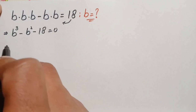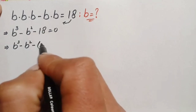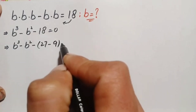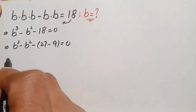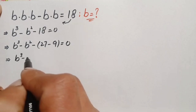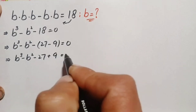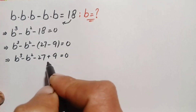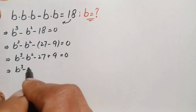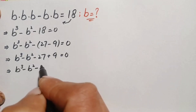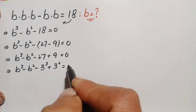We rewrite 18 as 27 minus 9, so: b cubed minus b squared minus 27 plus 9 equals 0. Now we express 27 and 9 in exponential form: 27 is 3 cubed and 9 is 3 squared, giving b cubed minus b squared minus 3 cubed plus 3 squared equals 0.